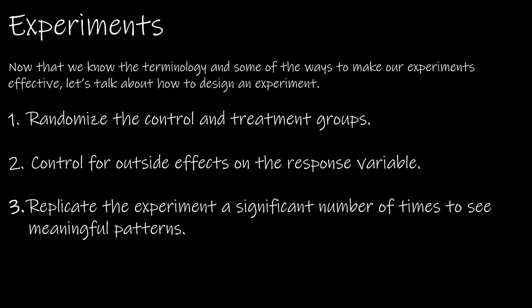Now let's look at how to design an experiment. First, randomize the control and treatment groups — we want people chosen at random. Second, control for outside effects on the response variables, meaning address those confounding variables that might affect the response other than the treatment. Third, and most importantly in the real world, replicate the experiment a significant number of times to see meaningful patterns. Often, researchers replicate the experiment and share all their setup information so other researchers can duplicate it and see if they reach the same conclusion.